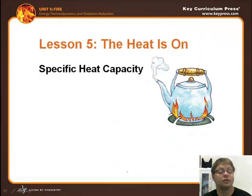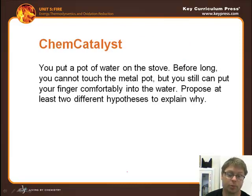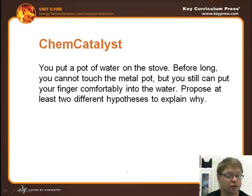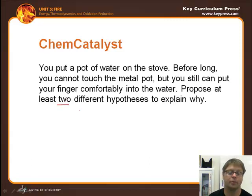Specific heat capacity refers to that middle term in the equation. For water it's one calorie per gram degree Celsius. However, if you put a pot of water on the stove, before long you cannot touch the metal pot, yet you can still comfortably put your finger in the water. What hypotheses might explain why these two materials behave so differently?